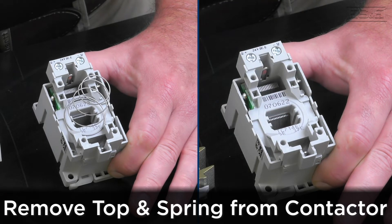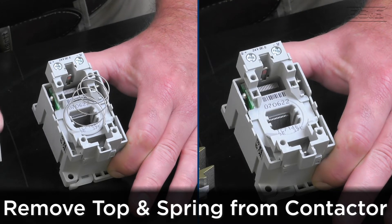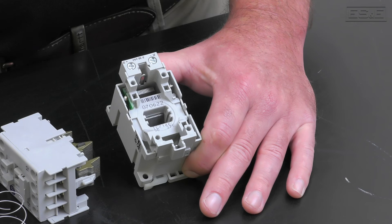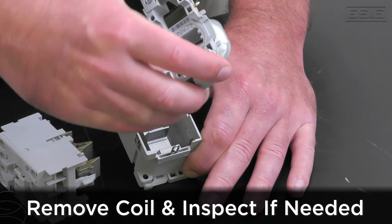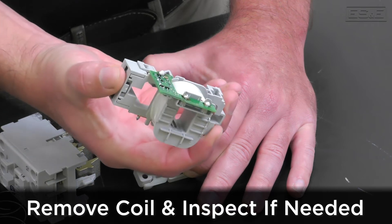Be sure to catch the coil spring and pay attention to its orientation for reassembly. Once you have removed the top cover and the spring, you can lift the coil out of the contactor base and inspect if needed.